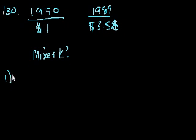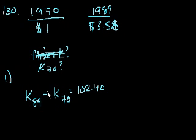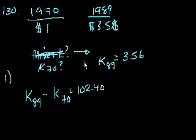Statement number 1. The price of the Model K mixer was $102.40 more in 1989 than 1970. So this essentially tells us that mixer K in 1989 minus mixer K in 1970 is equal to $102.40. But we also have other information. We know that mixer K went exactly with inflation.